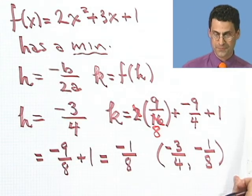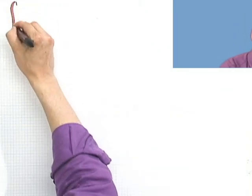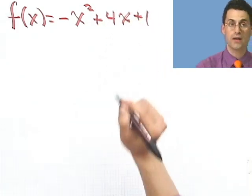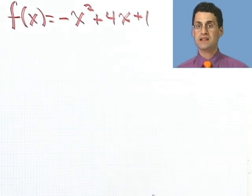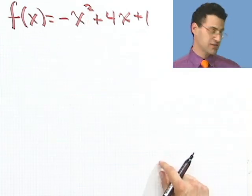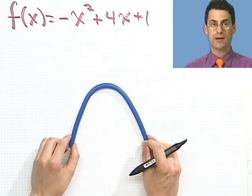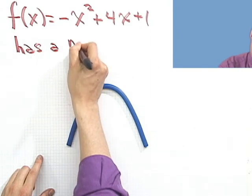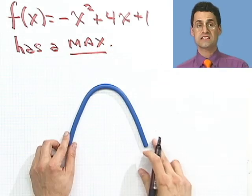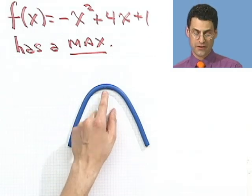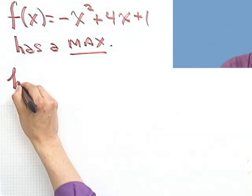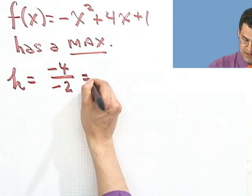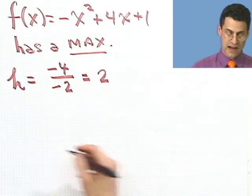Let's try another example: f(x) = minus x² + 4x + 1. First of all, will this have a max or a min? I see a negative coefficient in front of the x squared, so this is a sad face parabola. This will actually have a maximum. And that maximum is going to be located right at the vertex. So I have to find the vertex. First I'm going to find h. That's negative b, so that's minus 4, all over 2a, which is negative 2. That gives me 2.